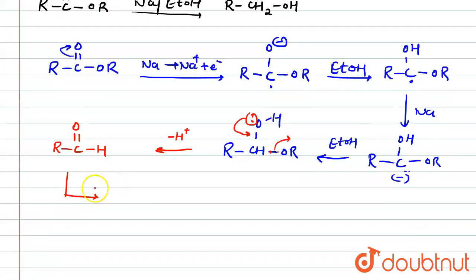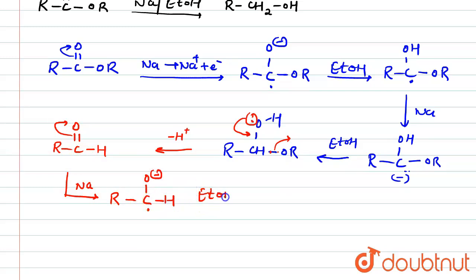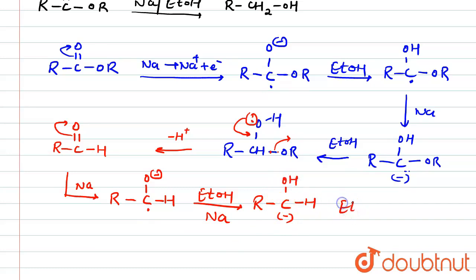From this aldehyde, again another mole of sodium is used. One electron is donated — the pi bond separates in the upper direction, that electron combines with the carbon to form a radical, and the oxygen converts to a negative charge. Then from EtOH, a hydrogen converts the radical into a carbanion. Finally, another H⁺ from EtOH converts it into R-CH₂OH, which is the final product.